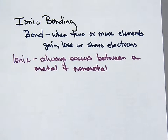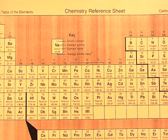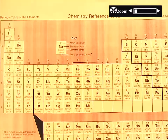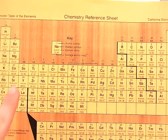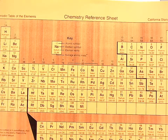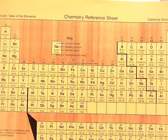If it's an ionic bond, it's always a metal and a non-metal — no exceptions. Metals on our periodic table tend to be on the left of the stair step. So these over here are my metals, and my non-metals are over here. If something from the metal side bonds with something from the non-metal side, it's ionic.